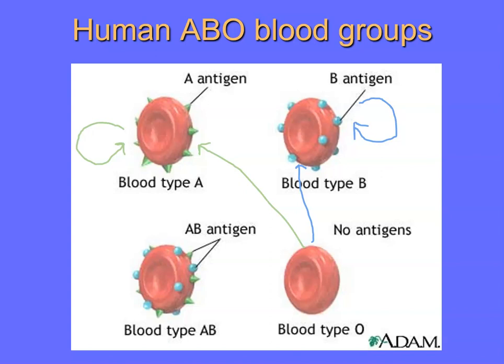Blood type AB can receive blood from all others because type A has the A antigen that AB also has, type B has the B antigen that AB has, and type O has no antigen — so it's never perceived as a threat. AB is the universal recipient. Type O, unfortunately, can only receive from other type O's. Any other blood type carrying antigens will trigger an immune response that could be fatal, as the blood will begin to clump or agglutinate inside the body during a transfusion.